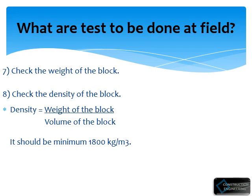Seventh, we have to check the weight of the block. Eighth, check the density of the block. The density is found using the formula: weight of the block divided by volume of the block. It should be a minimum of 1800 kg per cubic metre.